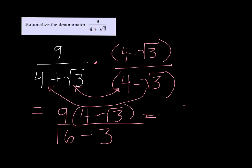So I get 9 times 4 minus the square root of 3 on top and 13 on the bottom. I can't simplify it any further so that is done.